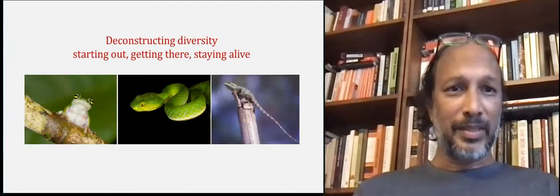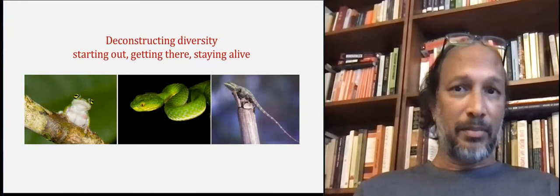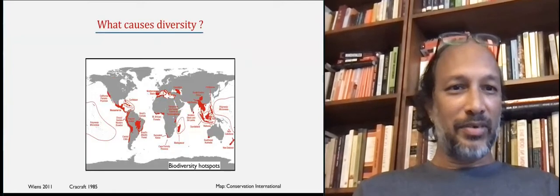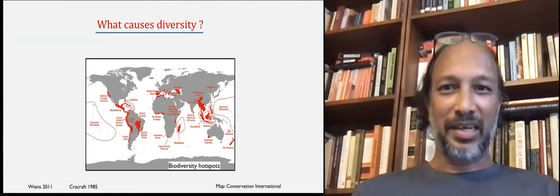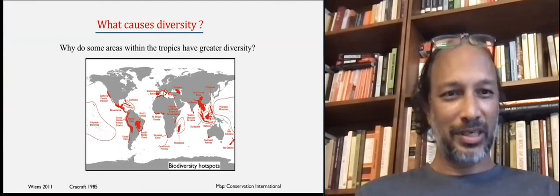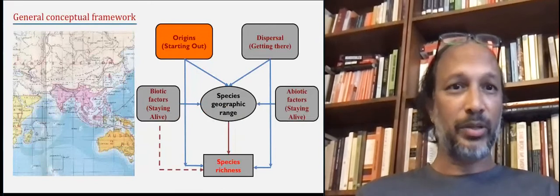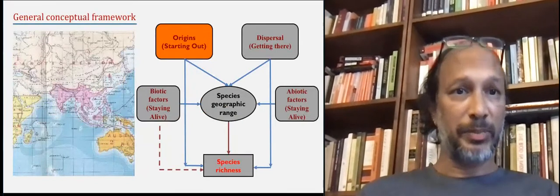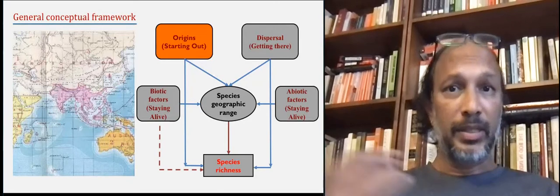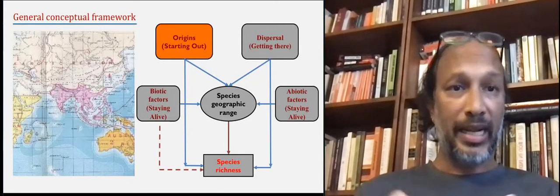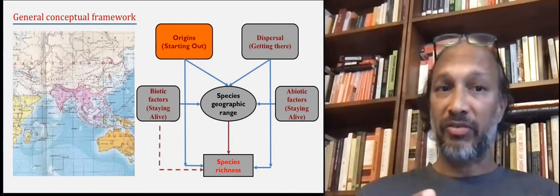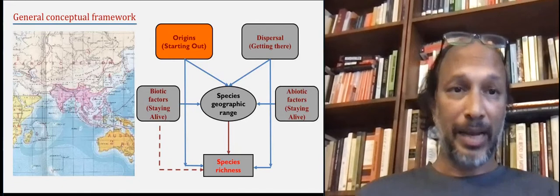The first basket of our work is in the realm of biogeography and we'll start out trying to understand how to deconstruct diversity. From the time of Linnaeus and Darwin, naturalists have been wondering what causes diversity and more specifically why some areas within the tropics have such high diversity. We use a general conceptual framework centered on species geographic range, which can be influenced by evolutionary origins — where species came from, how they got there or dispersal, and once you get there, you have to stay alive. So the influence of both biotic and abiotic factors in persistence — all of these determine species geographic range, and if you stack up the geographic ranges of many species, you get patterns of species richness.